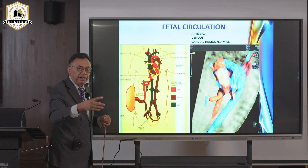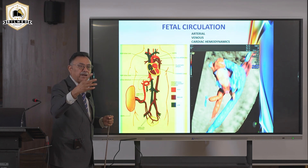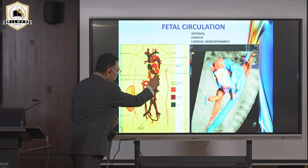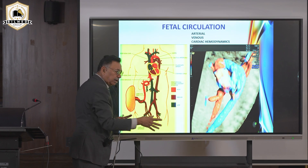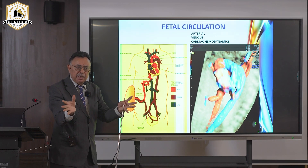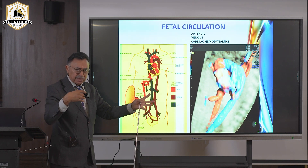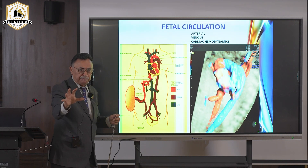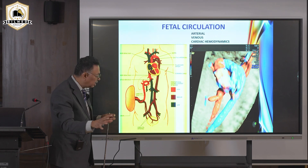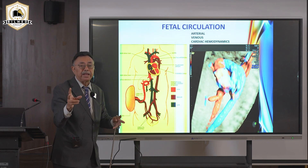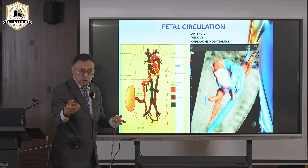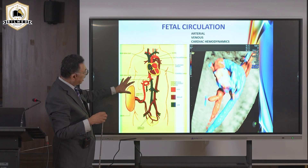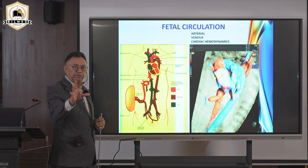All other parts of the fetal body receive medium-oxygenated blood, which is what the fetus requires — the fetal gut, kidneys, ovaries, tissue, and limbs via the femoral artery. The aorta divides into common iliacs, which divide into external and internal iliacs. External iliac goes to the limbs; internal iliac supplies pelvic organs and ends as two umbilical arteries returning to the placenta.